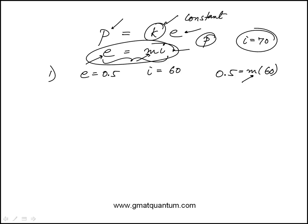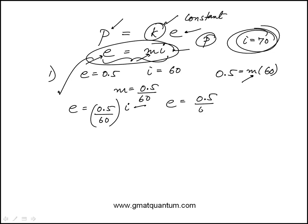For example, I know M is 0.5 over 60, and I can replace that here. I can find the efficiency index when I is 70. I can replace I with 70, so E would be... You don't have to necessarily do these steps. It's just to clearly show you that, yes,